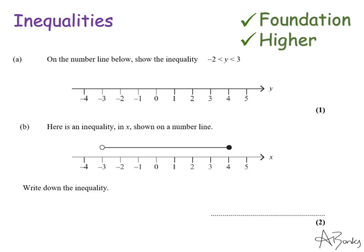Here's the next skill: how we show inequalities on number lines. This first inequality asks me to represent it on a number line. This time they're talking about y between minus two and three, and there is no line underneath any of the inequality symbols. So y is all the numbers between minus two and three but doesn't include minus two and doesn't include three. We're not just talking about integers, so y could be 2.9 for example.